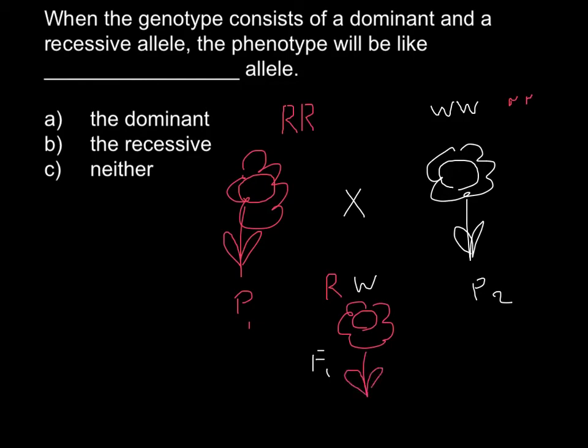Because it has one allele that is dominant over the other. R is dominant over W. So red color would be dominant over white color, and phenotypically this plant would be the same as the parent 1 plant.